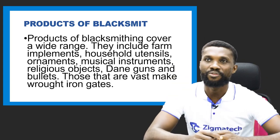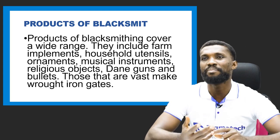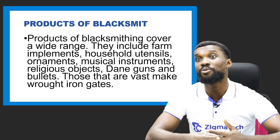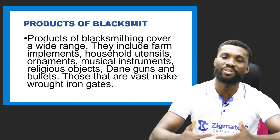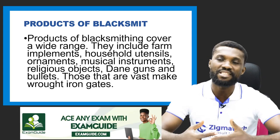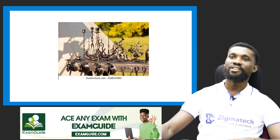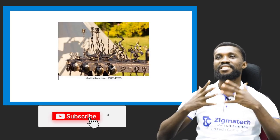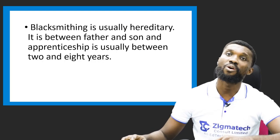The products of blacksmithing cover a wide range of items, including farm implements, household utensils, ornaments, musical instruments, religious objects, guns, and bullets. Anything that relates to iron is related to a blacksmith. Those who are more advanced make iron gates and other bigger objects with metal. You can see some intricate, beautiful candlestands and artworks — all carved out from metal — that is the handiwork of a blacksmith.